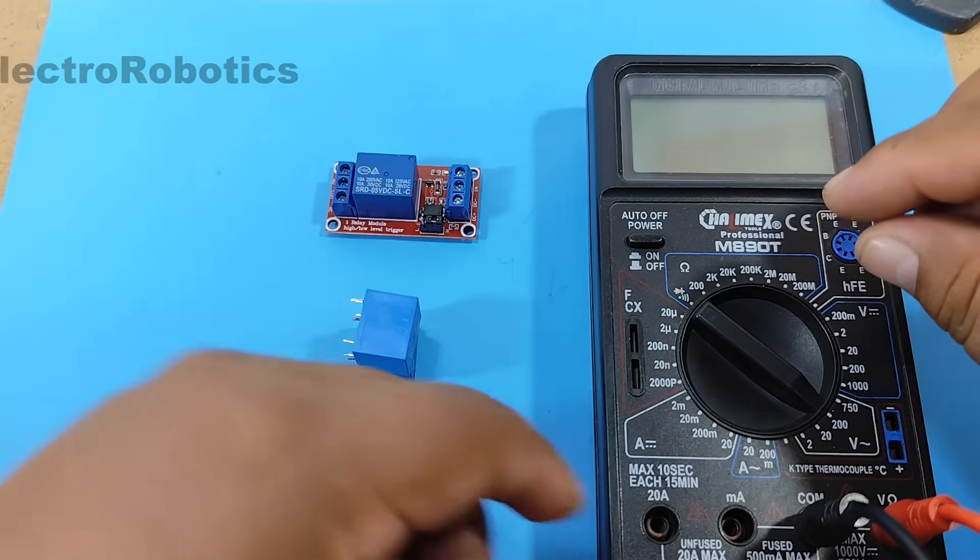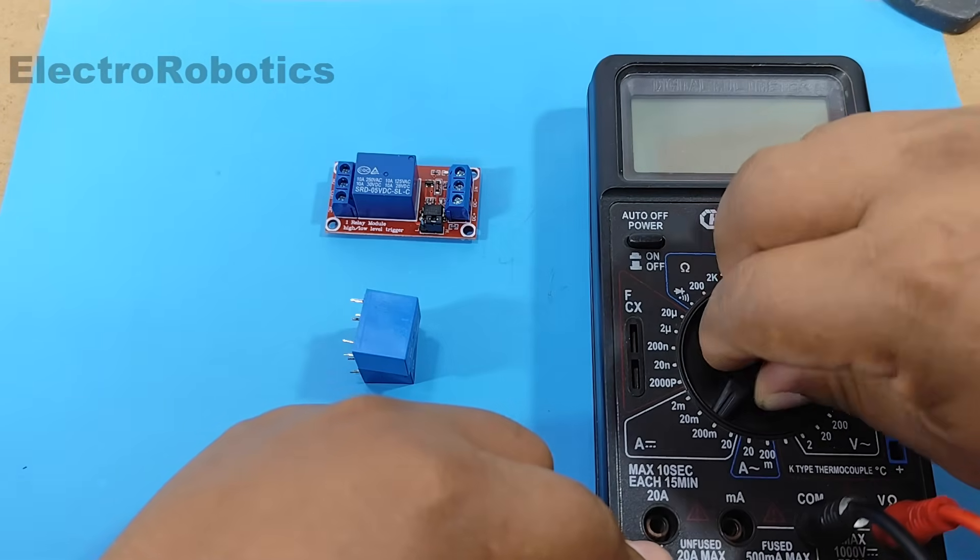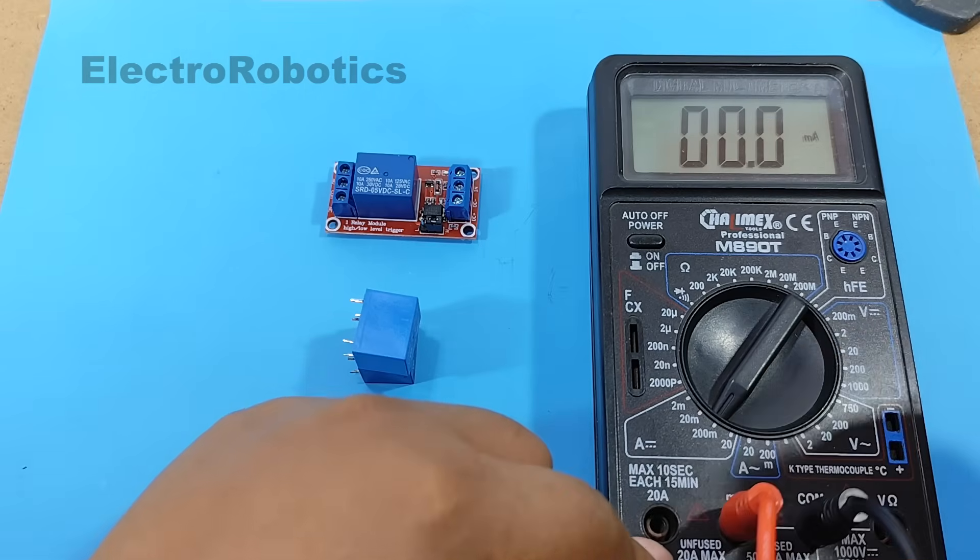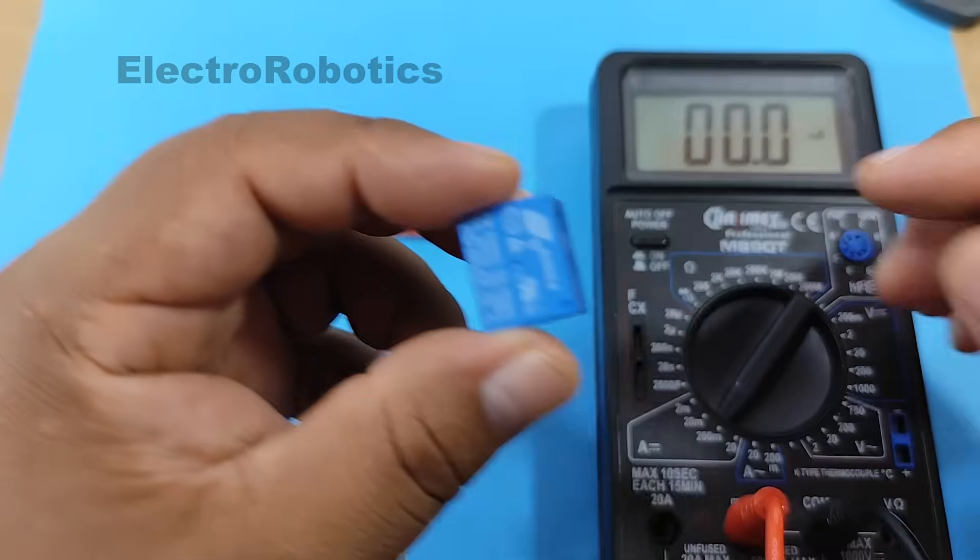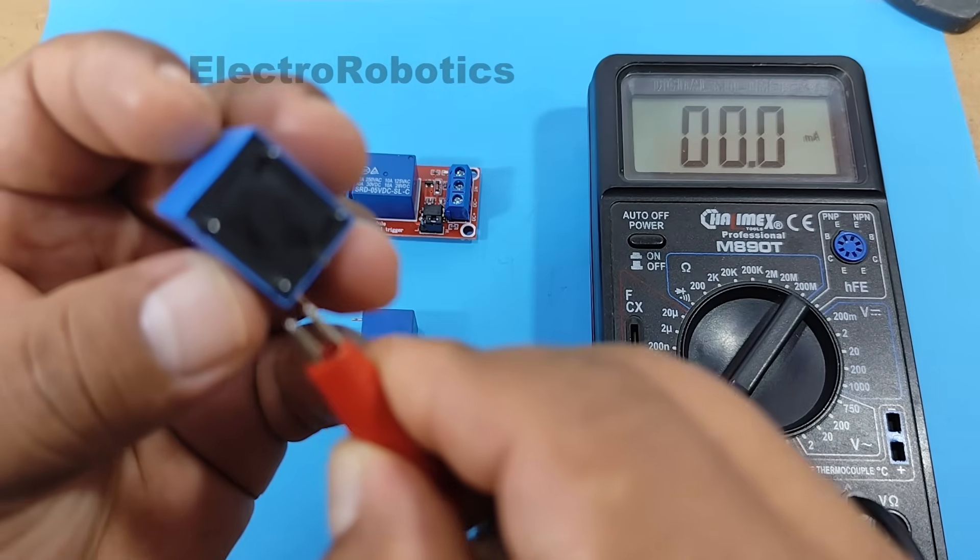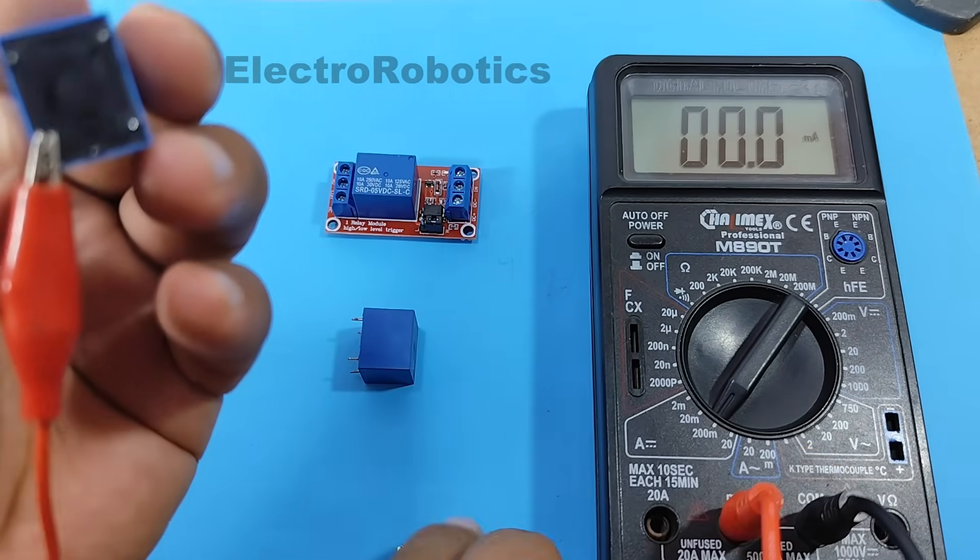We set the multimeter to DC. First, we energize the 5 volt relay. Pay attention to the screen.